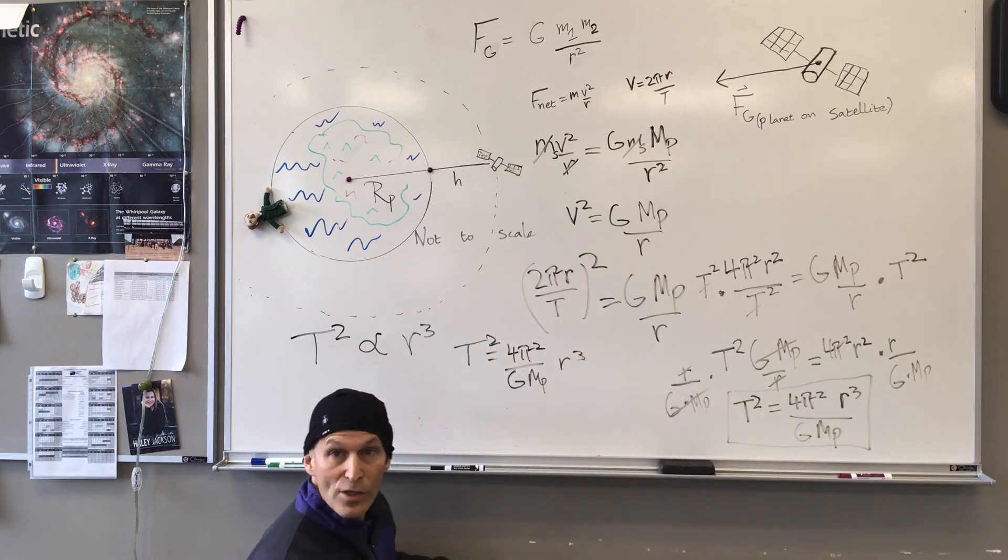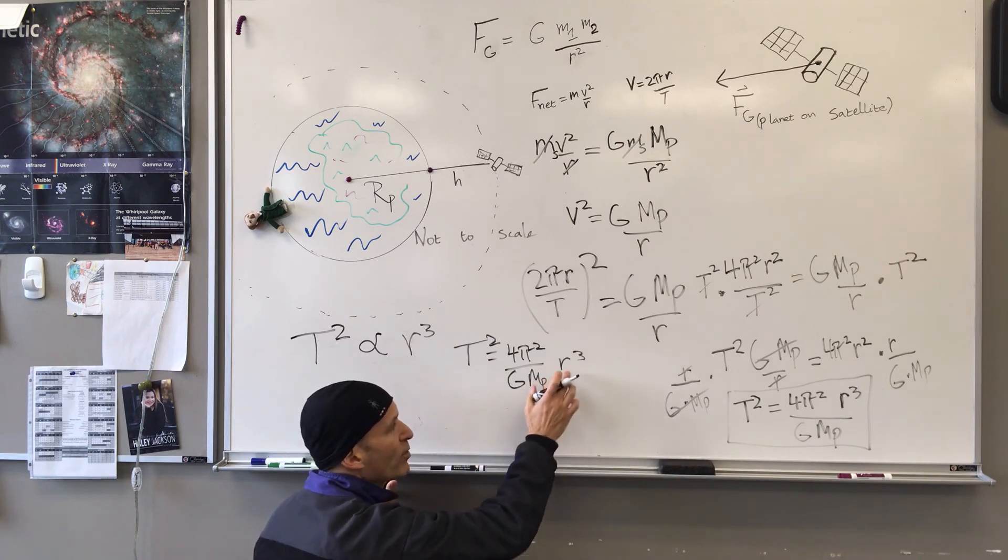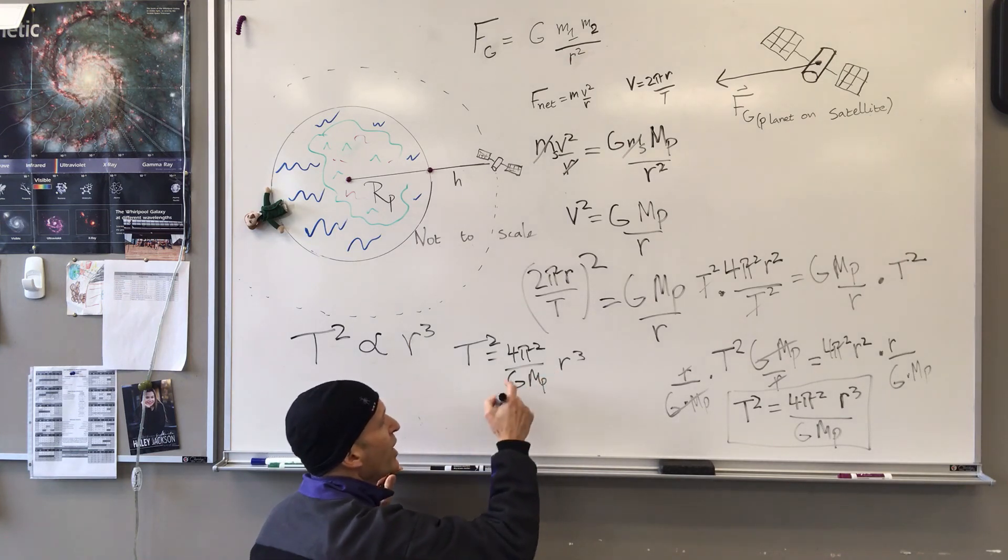If these things are proportional to each other, if T squared is proportional to R cubed, then everything that's multiplied by R cubed must be a constant. So let's check that.